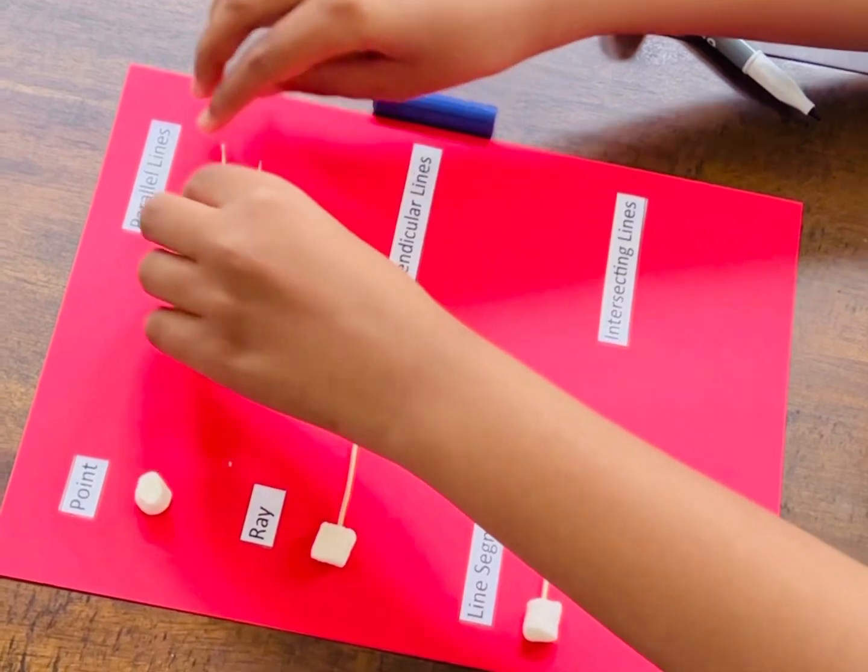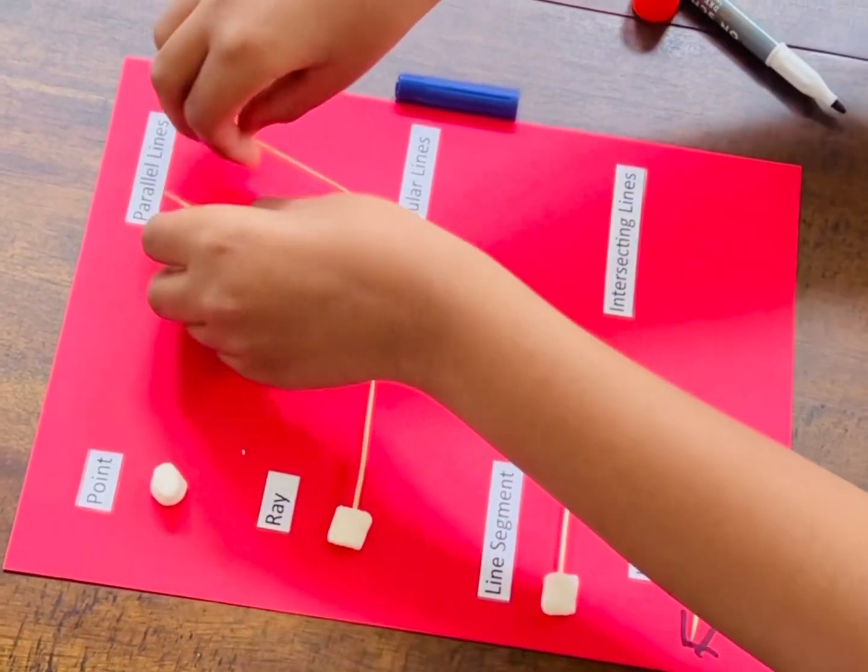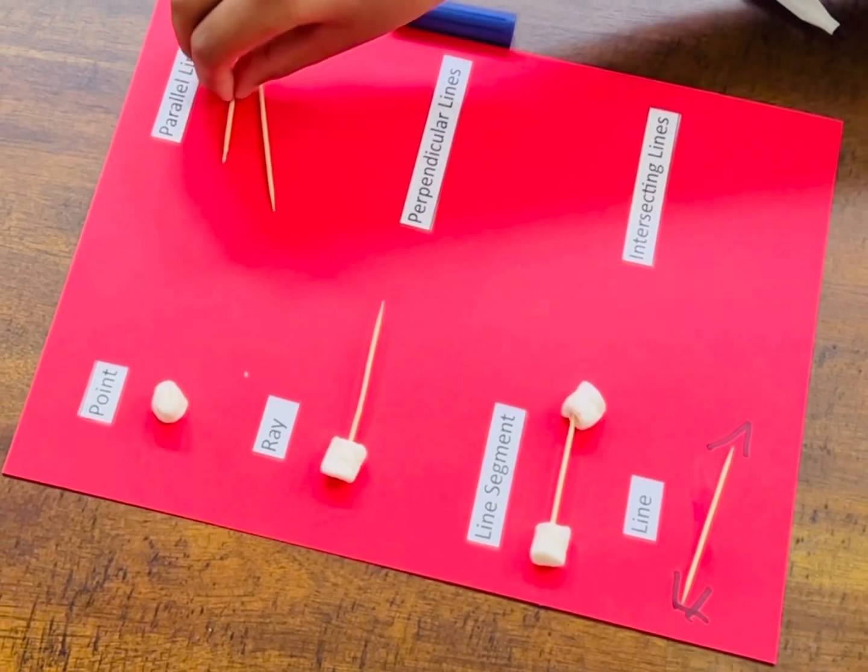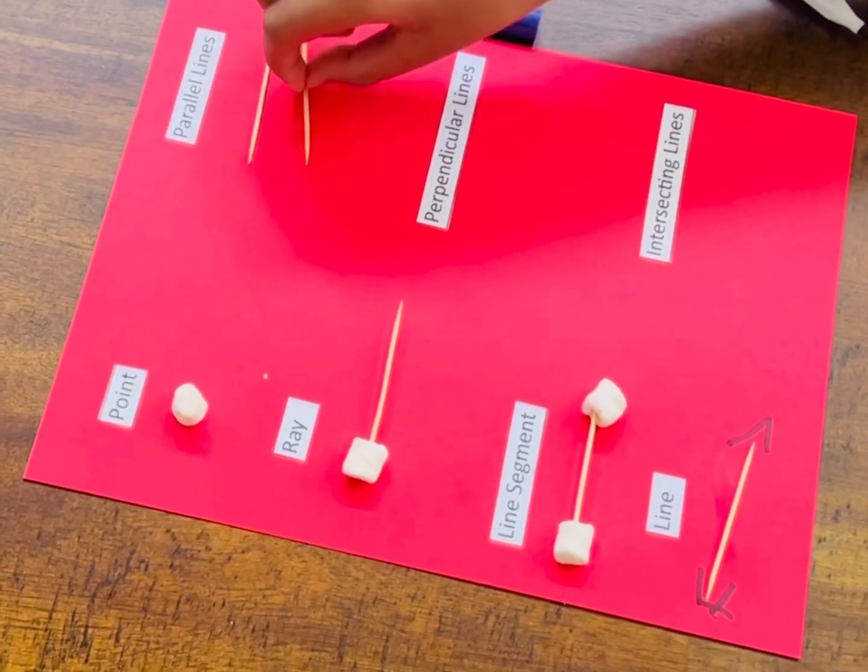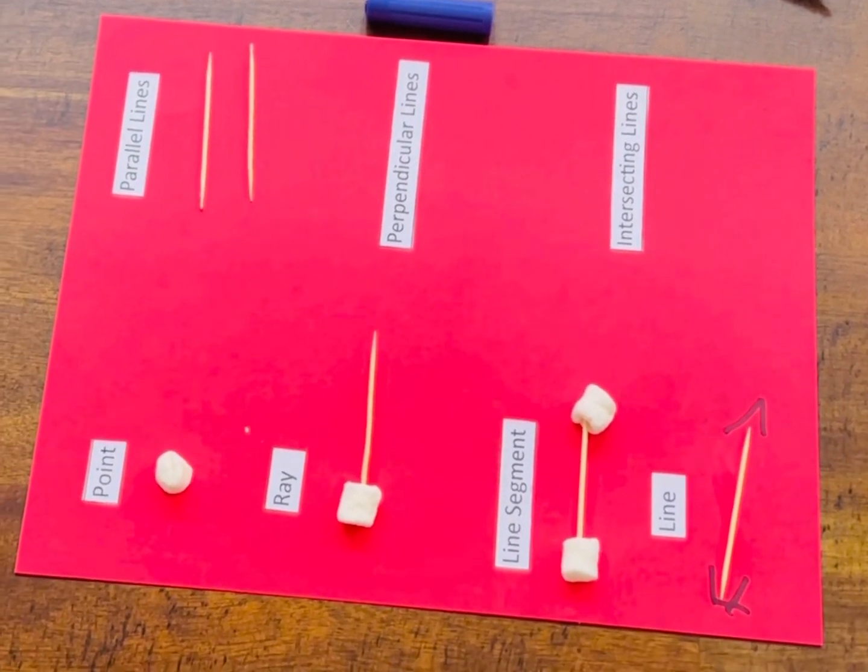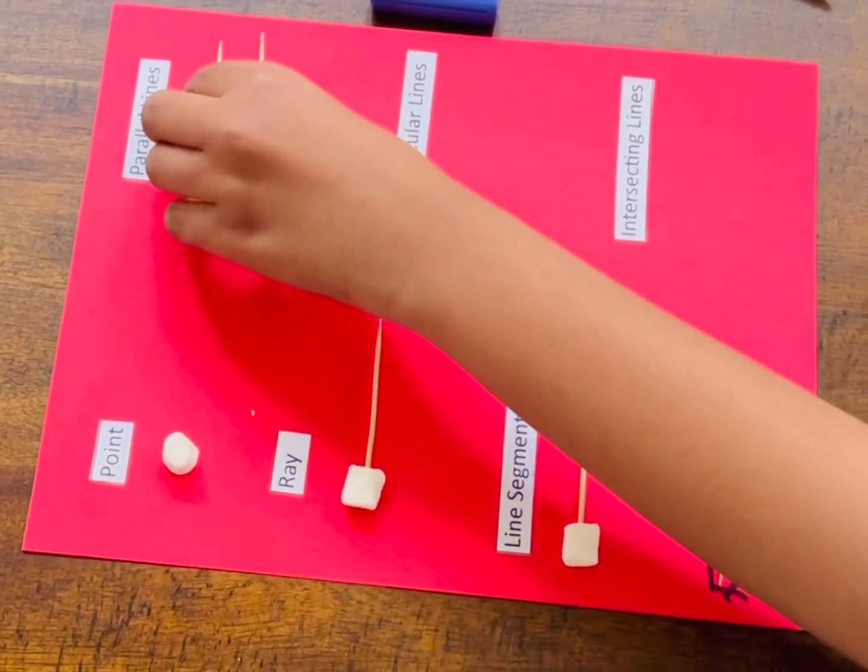could be like this, or they could be like this. They can go in a horizontal direction, and they can go in a vertical direction, but they will never touch. I'm just going to be doing it in a horizontal direction.